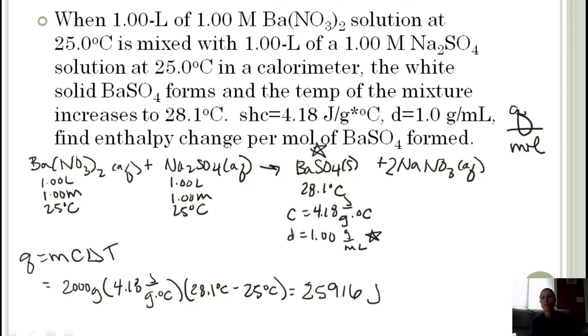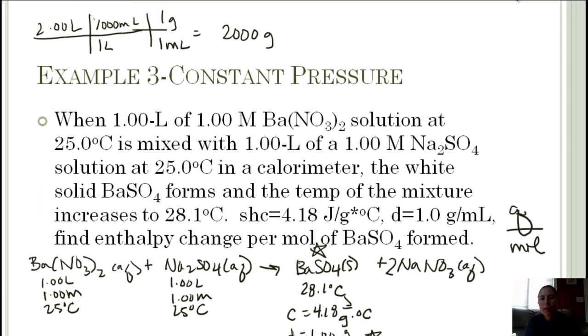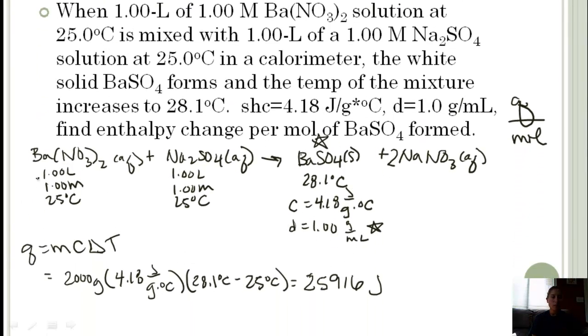We know that molarity equals moles per liter. If I want moles, that's molarity times liters. Barium nitrate, 1 times 1 is 1. Sodium sulfate, 1 times 1 is 1. So these are all 1 mole, so there really is no limiting reactant. Because they're all 1 to 1 to 1, that means that I have 1 mole of barium sulfate.